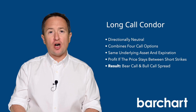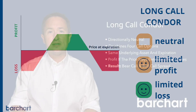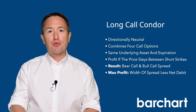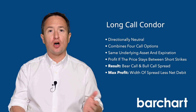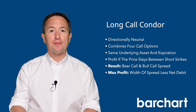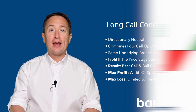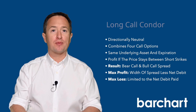The goal of the long call condor is for the asset to stay between the two middle strike prices at expiration. If that happens, maximum profit will be achieved when the options settle. The maximum profit is the difference between the strike prices of the bull call spread — the lower spread width — minus the net debit paid. The maximum loss is limited to the net debit paid, and that happens if the asset price at expiration trades below the lowest strike or above the highest strike price.